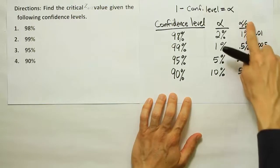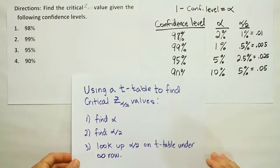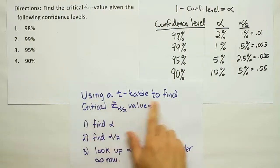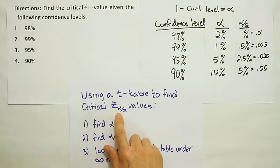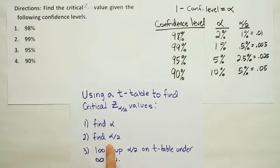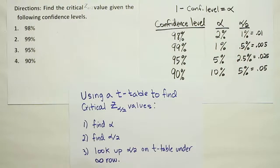If we know these alpha divided by 2 values, it's those values that we're supposed to look up on our T-table. So I've gone ahead and wrote these steps out for you, and you can copy them down now. Essentially, what we're doing here is using a T-table to find critical Z alpha divided by 2 values. So the steps are really simple. The first step is you have to find your alpha value. We just showed how to do that. Subtract your confidence level from 100%. Step 2, you find alpha divided by 2. You just divide your alpha in half.